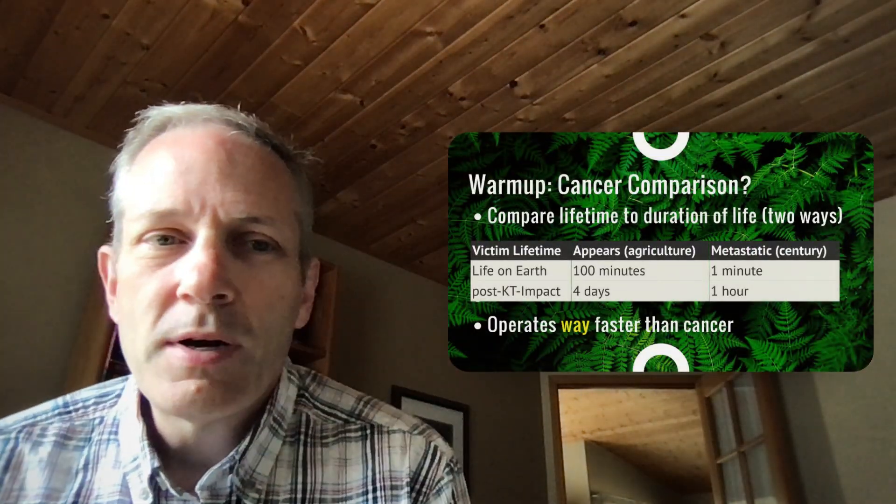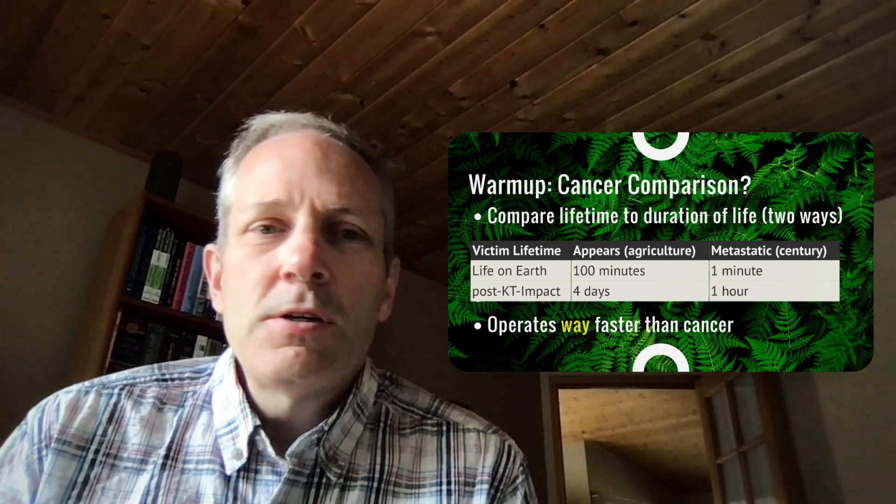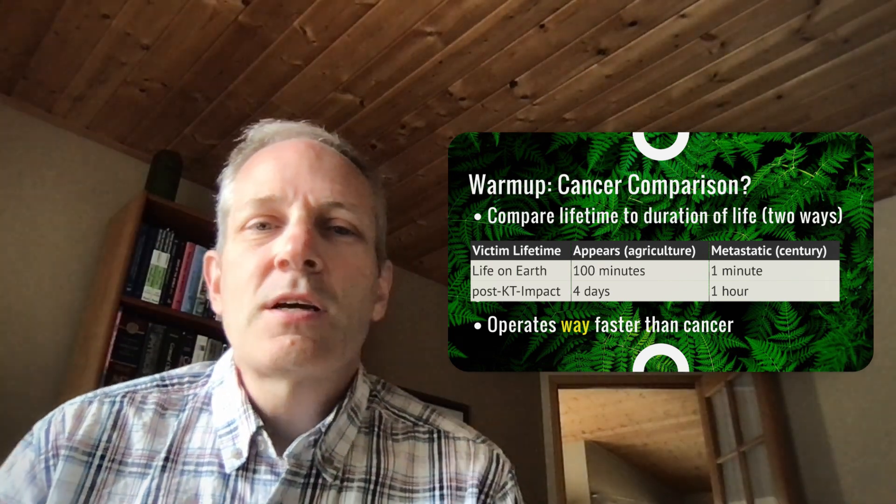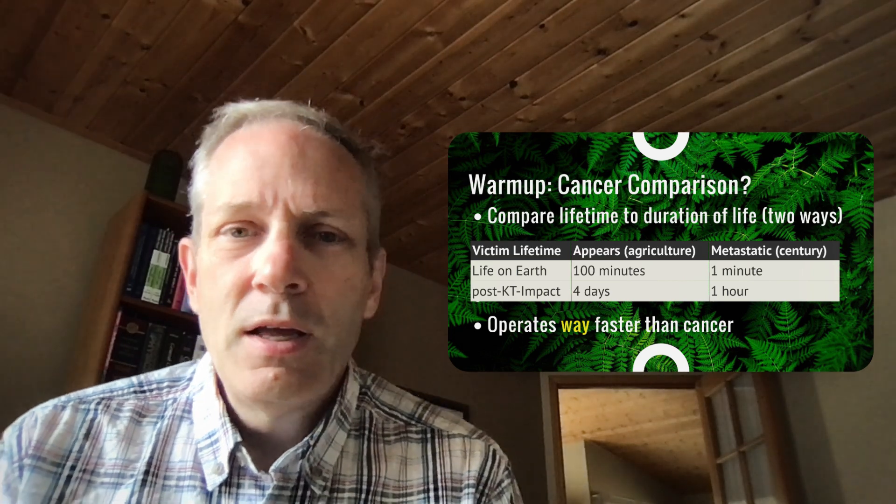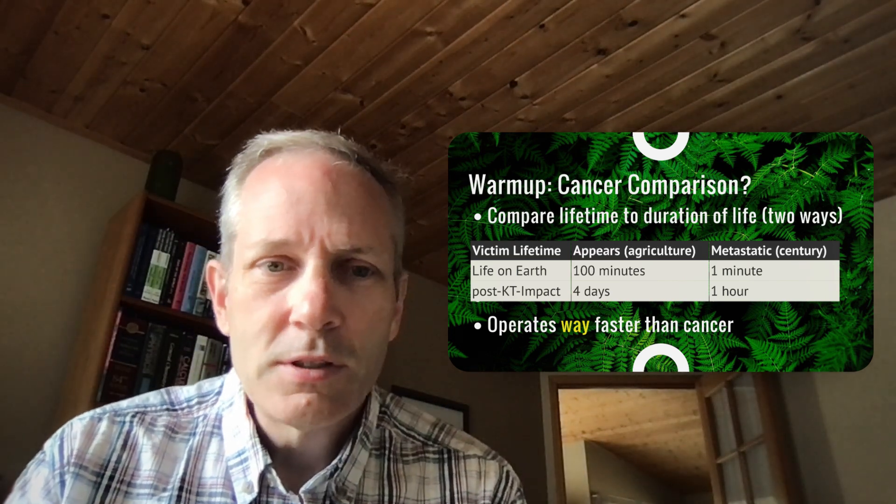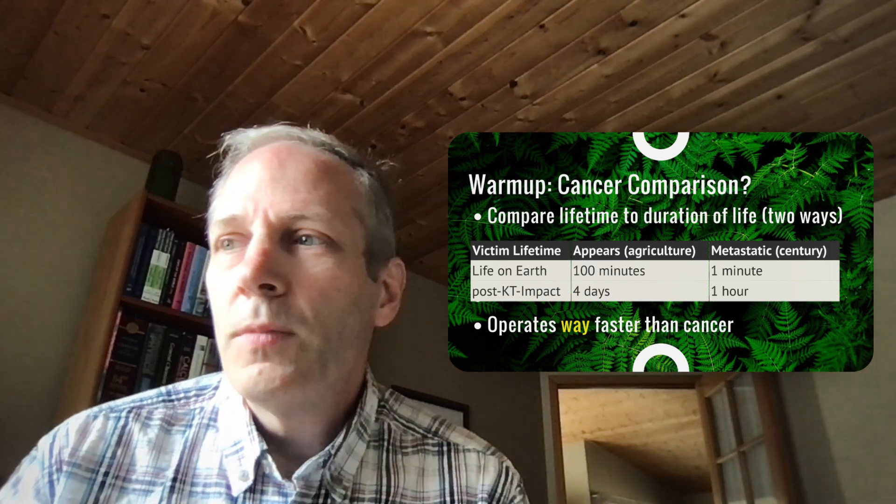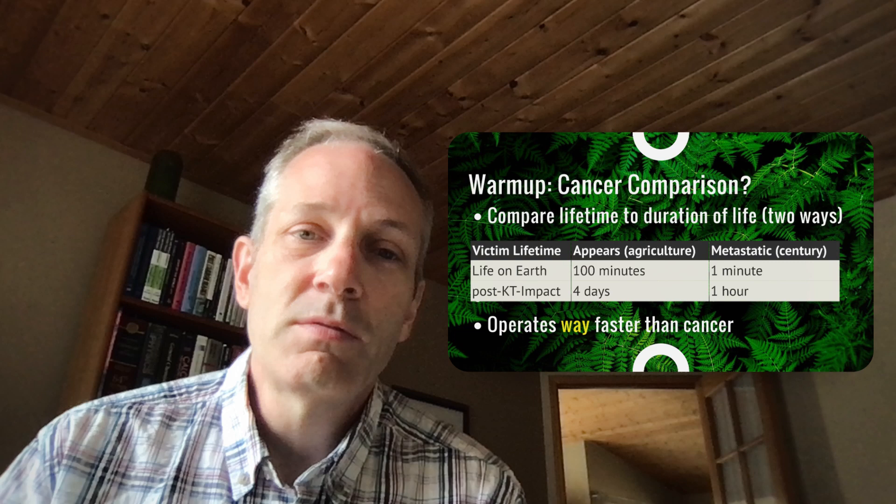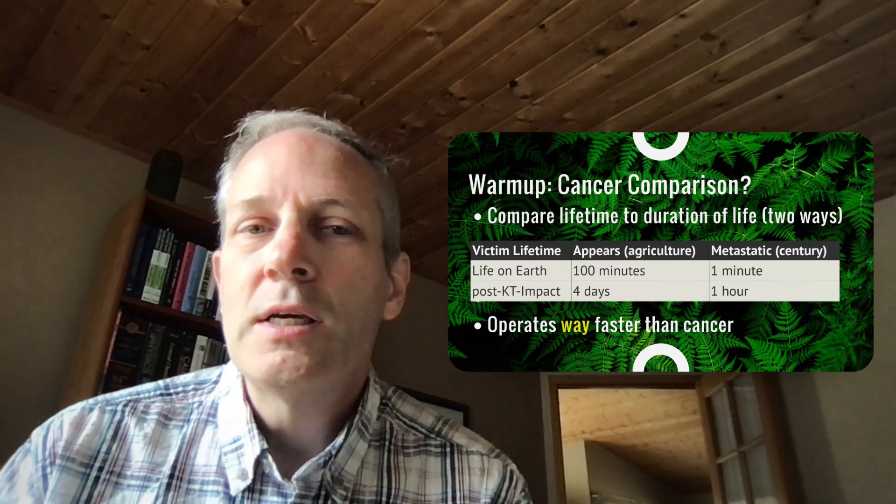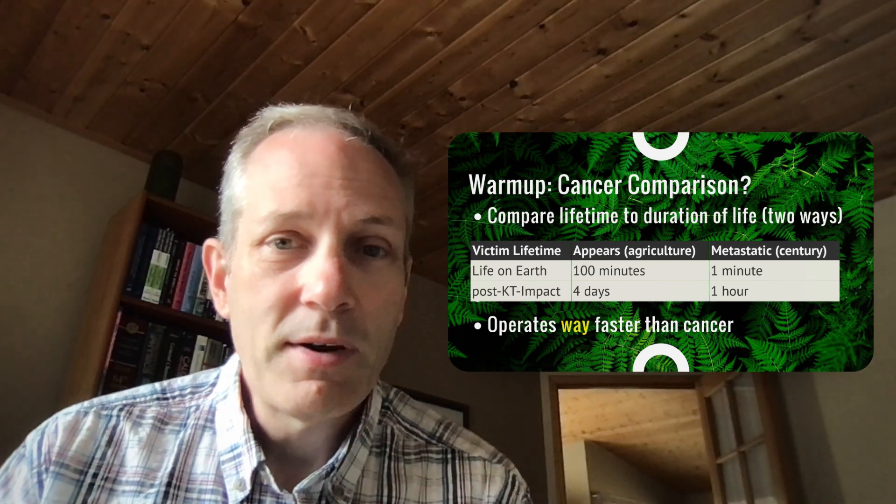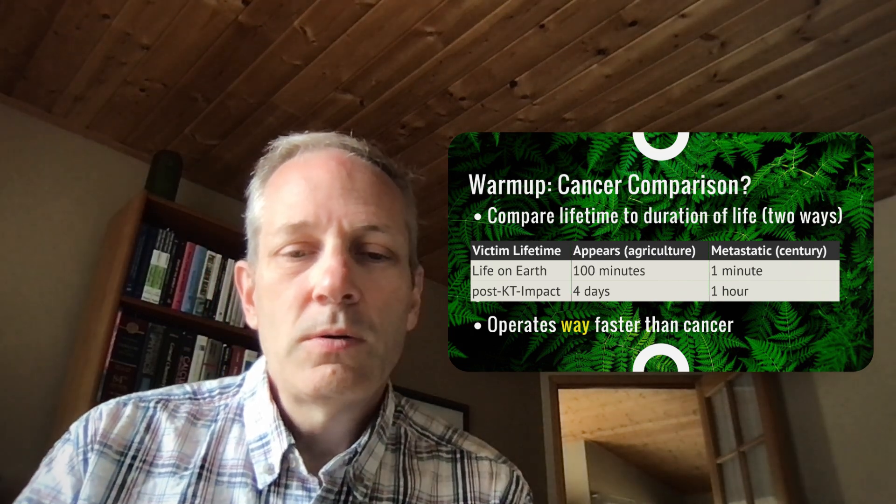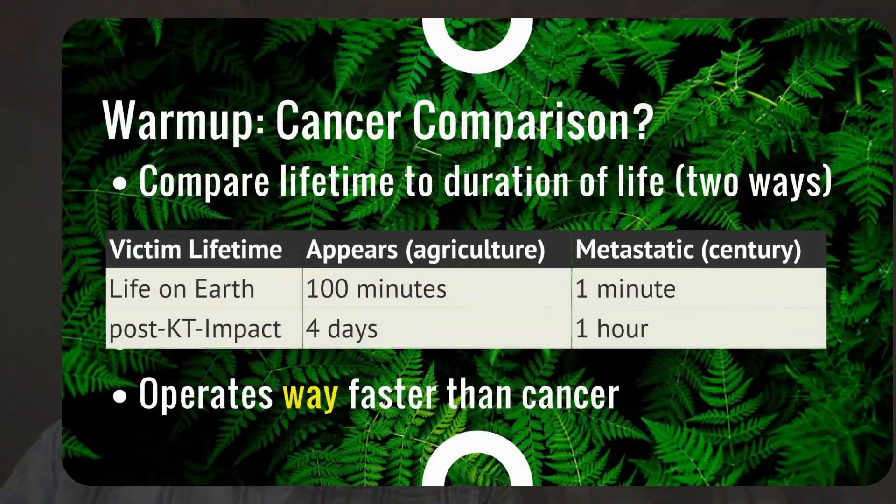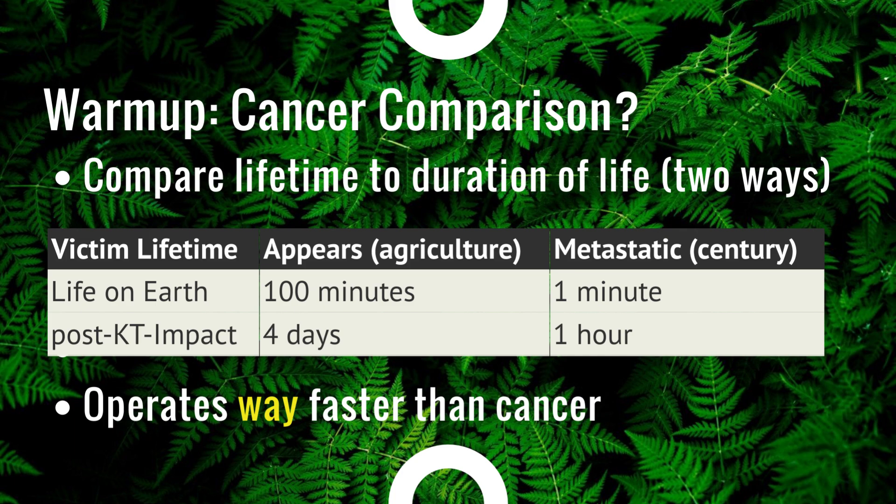Before the main comparisons, I want to do this warm-up. In a series called Metastatic Modernity, it would make sense to compare the timeline of modernity to that of cancer, but it doesn't really work. In each case, I'm going to compare the birth of the patient who eventually gets cancer to either the birth of life on Earth, or the rebirth of life after the last mass extinction event. In the first case, the cancer only shows up 100 minutes, or less than two hours before death, and goes metastatic in just a minute, which is really crazy fast.